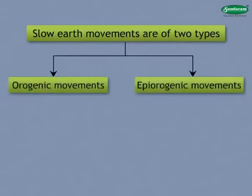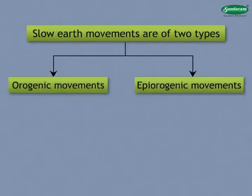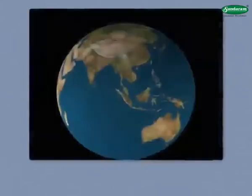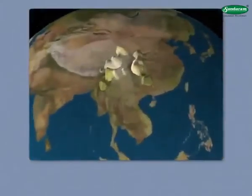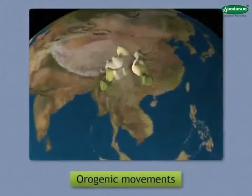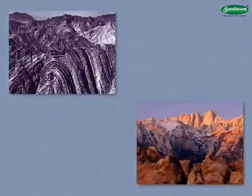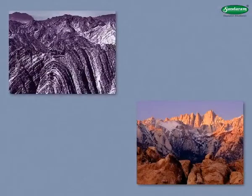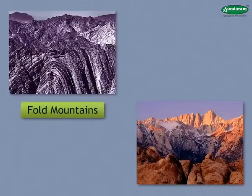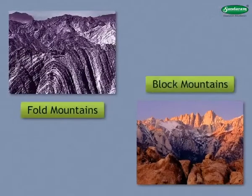Types of Slow Earth Movements. Slow earth movements are of two types: A. Orogenic Movements and B. Epi-Orogenic Movements. The movements that give rise to mountains are called orogenic movements. Orogenic movements give rise to two types of mountains: fold mountains and block mountains.